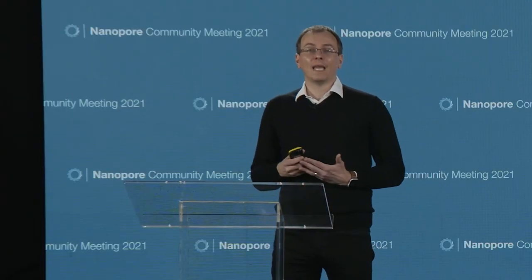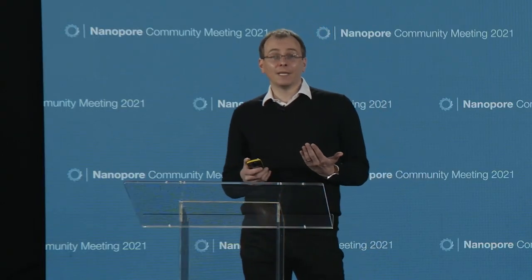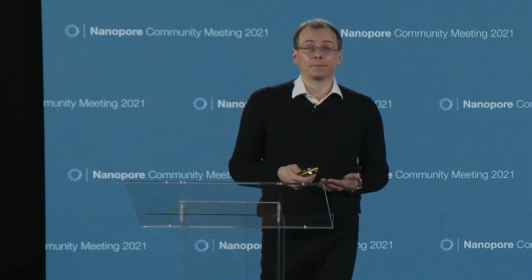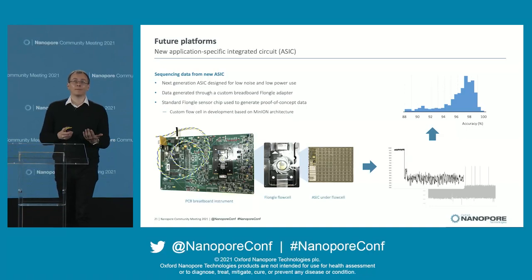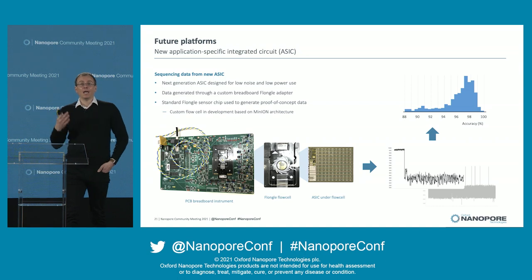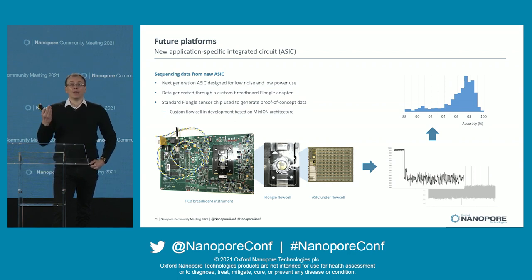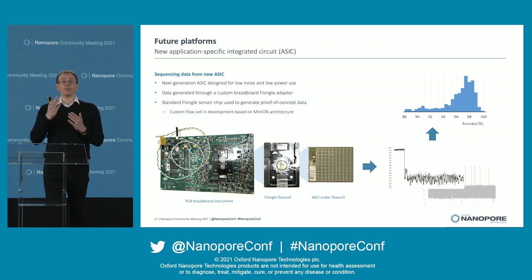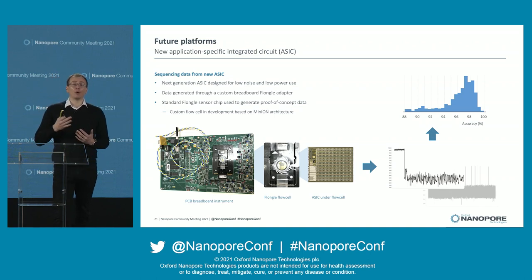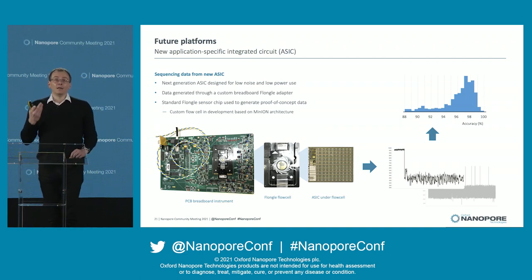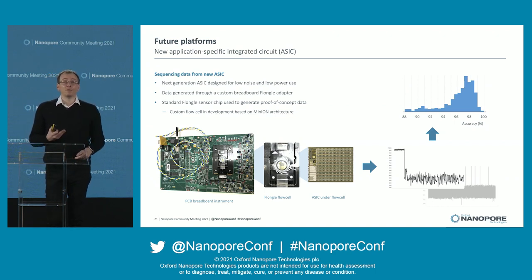At London Calling we said we would be targeting sequencing data by NCM — which is obviously this meeting. We have managed to build a breadboard with the new ASIC, using a Flongle adapter format — so we're just attaching a standard Flongle flow cell to the new ASIC. The actual product won't be like this; it will probably be in a more MinION-like form where the ASIC is in the consumable — because the ASIC is so small and cheap, and it gives us the most channels and lowest possible noise.